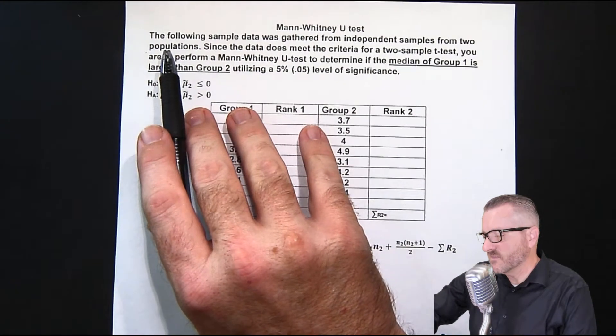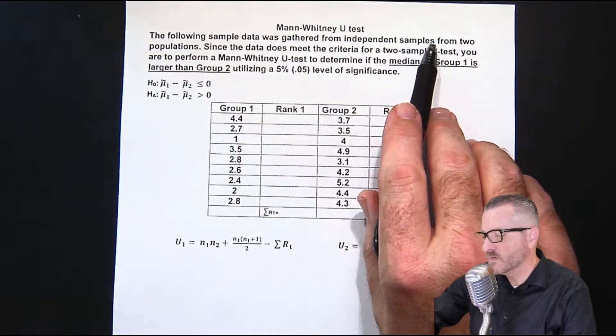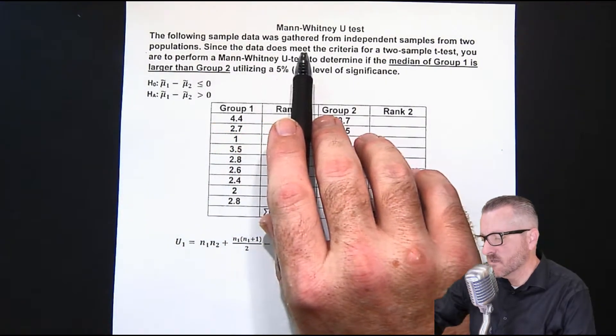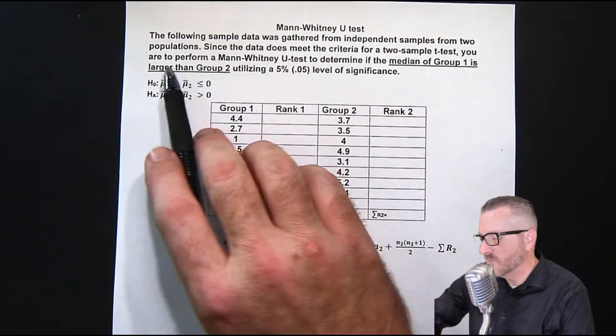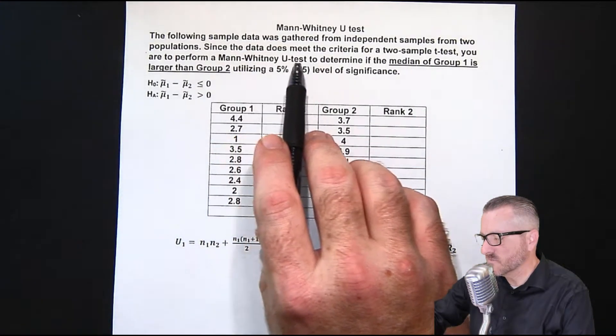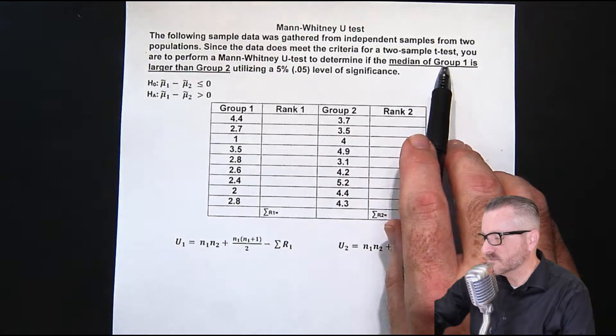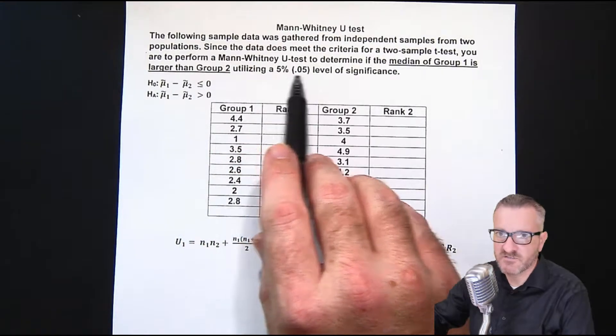So it says, the following sample was gathered from independent samples from two populations. Since the data does not meet the criteria for a two-sample t-test, you are to perform a Mann-Whitney U test to determine if the median of group 1 is larger than group 2, utilizing a 5% level of significance.